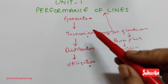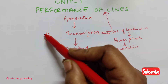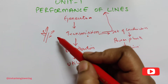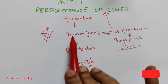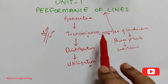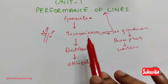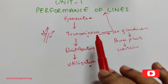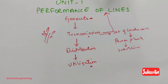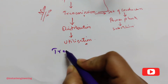Outside cities you'll see big transmission line towers and large transformers — that process is transmission. Transmission lines are classified into three types.